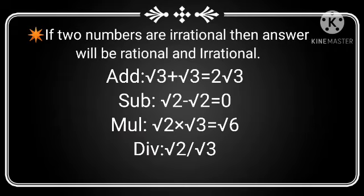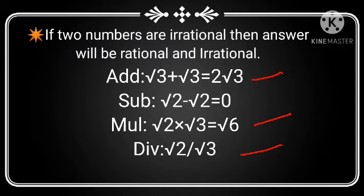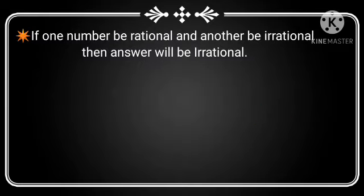Next: if two numbers are irrational, then the answer will be rational or irrational. For example, root 3 plus root 3 gives 2 root 3; root 2 minus root 2 equals 0; root 2 into root 3 equals root 6; root 2 divided by root 3. Three of these answers are irrational and one (root 2 minus root 2 = 0) is rational.